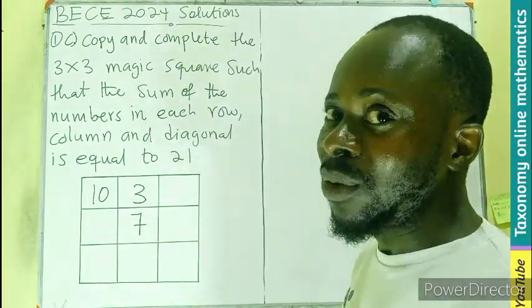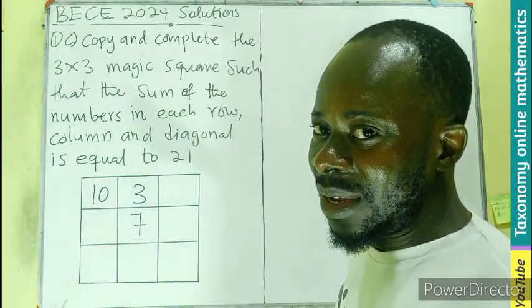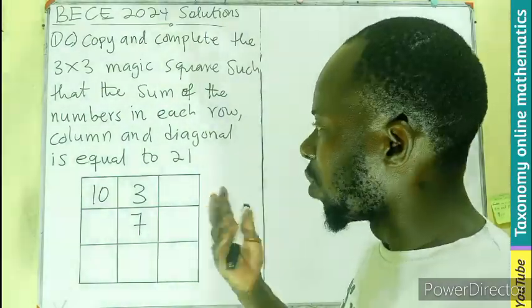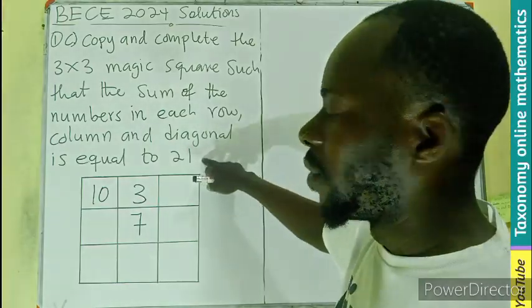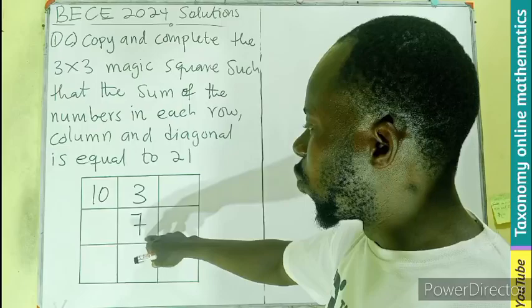Some facts we need to know: one common fact is that the middle number times three will give you the sum of what you're looking for. So three times this gives us 21.